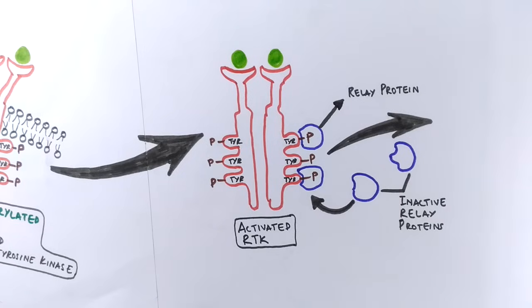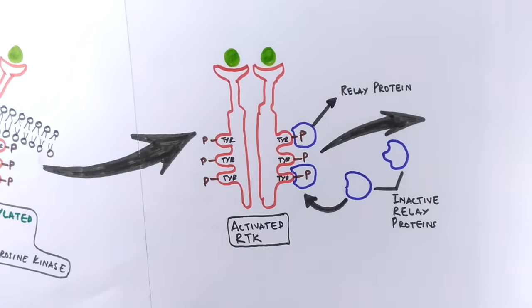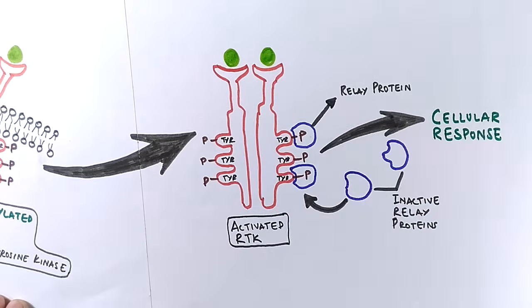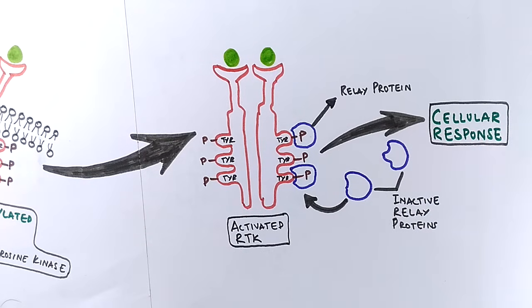After that, each activated protein triggers a transduction pathway leading to a cellular response. So this is how RTKs are activated by ligands via kinase activity.